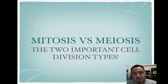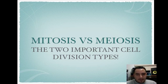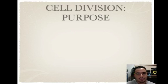Hello students, today we're going to learn about mitosis versus meiosis. These are the two important cell division types we have in eukaryotic cells. Let's take a closer look.